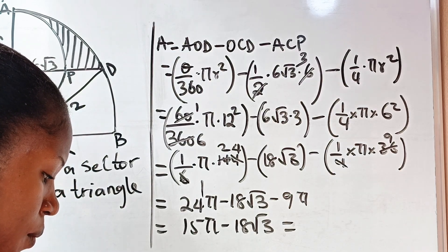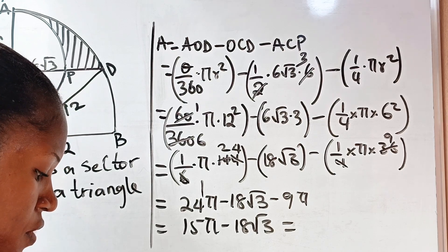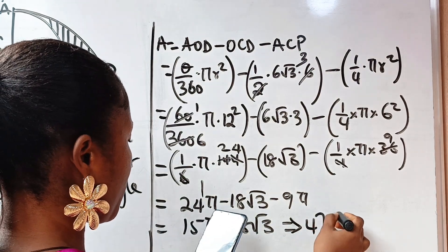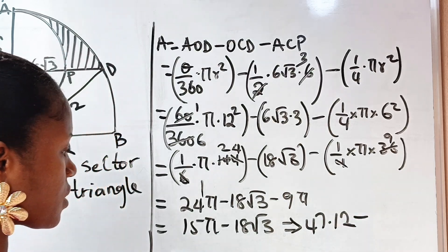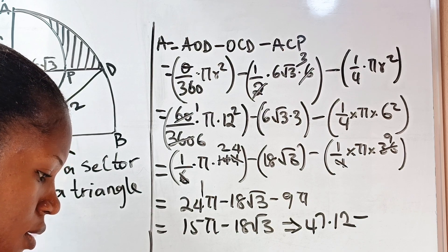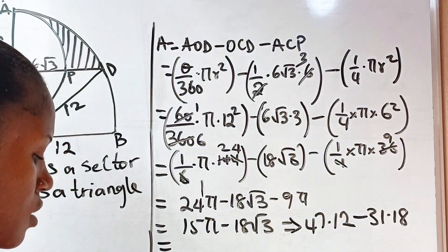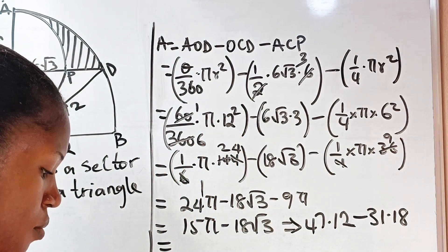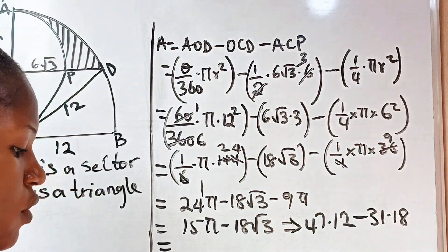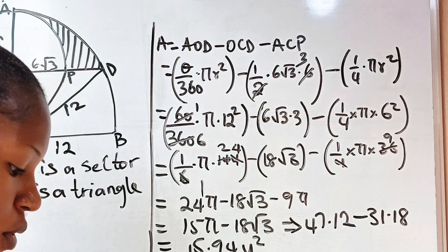Using a calculator: 15π is approximately 47.12, and 18√3 is approximately 31.18. So the final answer is approximately 47.12 minus 31.18, which gives us 15.94 square units.